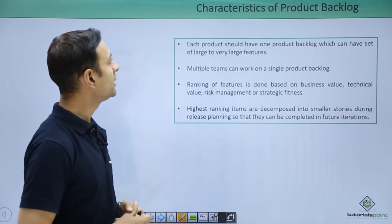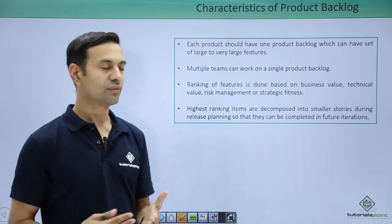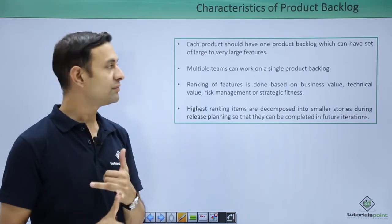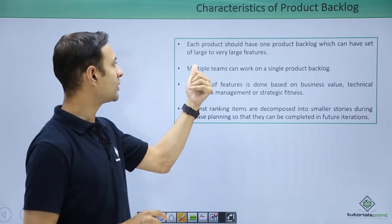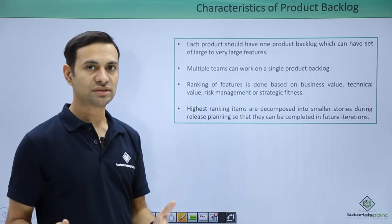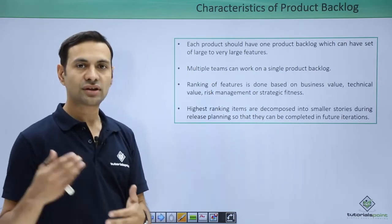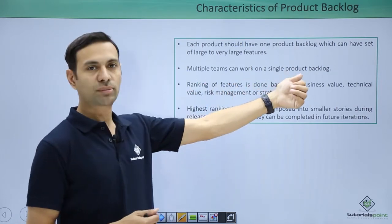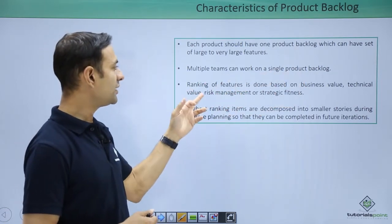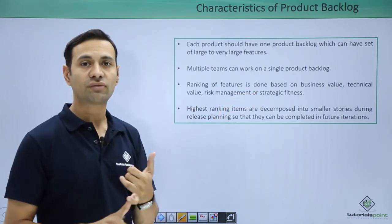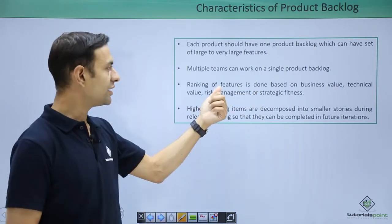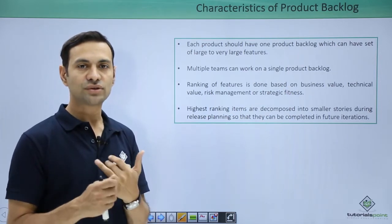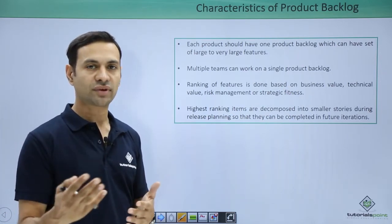What are the characteristics of product backlog? Each product should have one product backlog — this is mandatory — which can have a set of large to very large features that then need to be broken down into smaller features. Multiple teams can work on a single product backlog; this is a kind of collaboration. Ranking of features is done based on business value, not feasibility. Highest business value means highest priority because we ultimately require customer satisfaction.